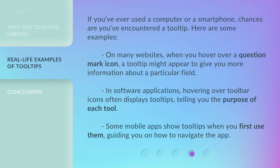If you've ever used a computer or a smartphone, chances are you've encountered a tooltip. Here are some examples. On many websites, when you hover over a question mark icon, a tooltip might appear to give you more information about a particular field. In software applications, hovering over toolbar icons often displays tooltips, telling you the purpose of each tool. Some mobile apps show tooltips when you first use them, guiding you on how to navigate the app.